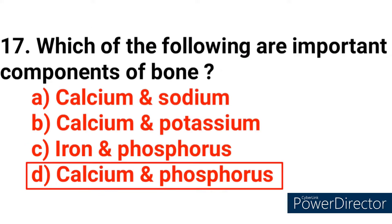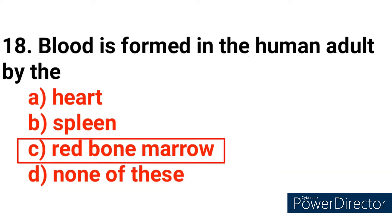Question number 17: Which of the following are important components of bone? Answer option D — calcium and phosphorus. Question number 18: Blood is formed in the human adult by the? Answer option C — red bone marrow.